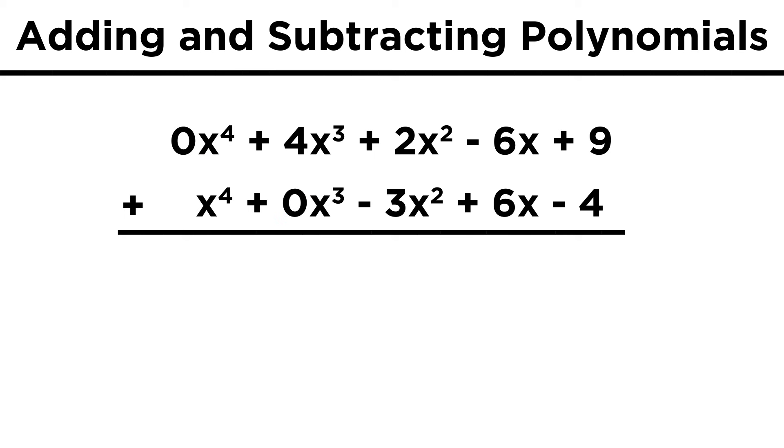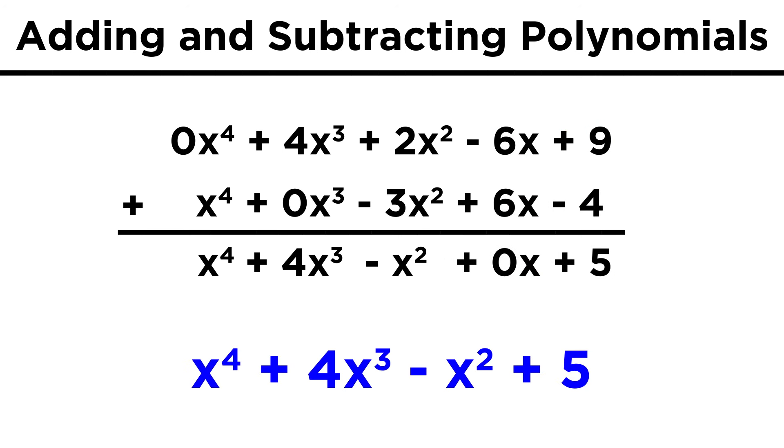Now with everything lined up, we just add. X to the fourth is by itself, so we leave it alone. Same with 4x cubed, that will stay as is. Then we have 2x squared minus 3x squared, which leaves us with negative x squared. Negative 6x plus 6x leaves us with zero for the x term, and 9 minus 4 is 5. So x to the fourth plus 4x cubed minus x squared plus 5 will be the answer.